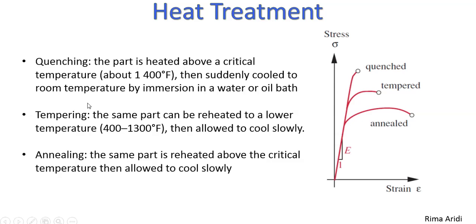Tempering is reheating the support to a lower temperature then cooled down slowly. Using this method reduces the strength and restores some ductility, as is noticed on the graph. Annealing is reheating the support above the critical temperature and allowing it to cool slowly.